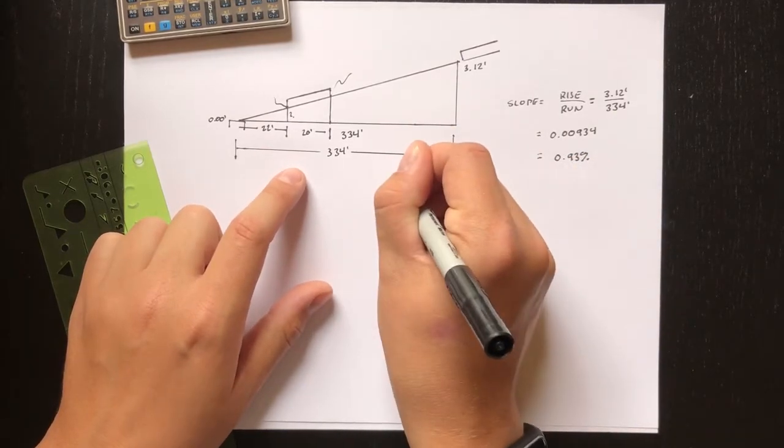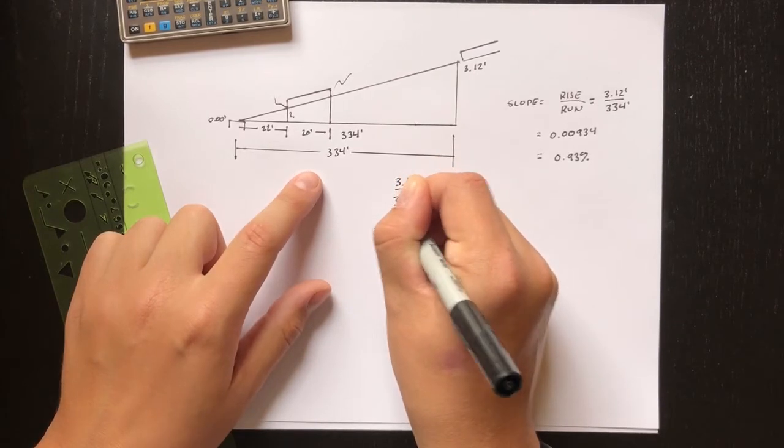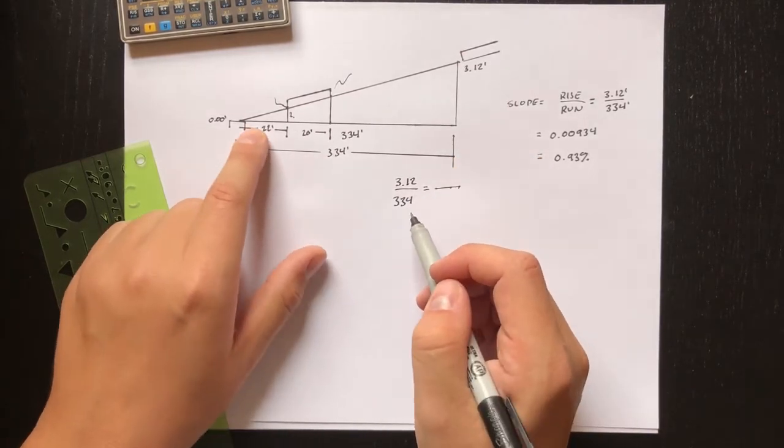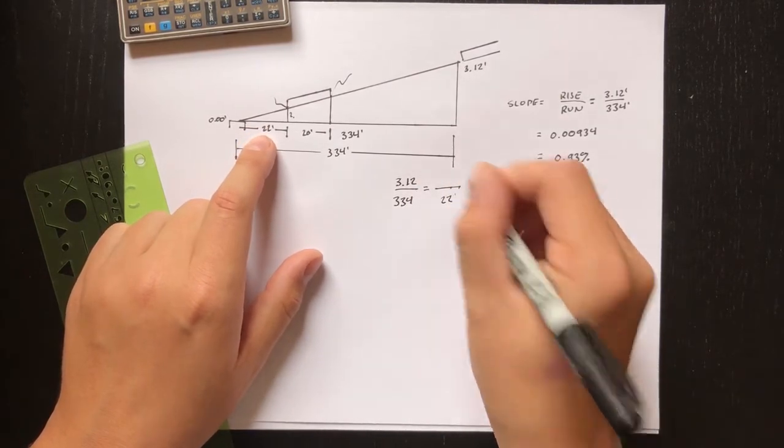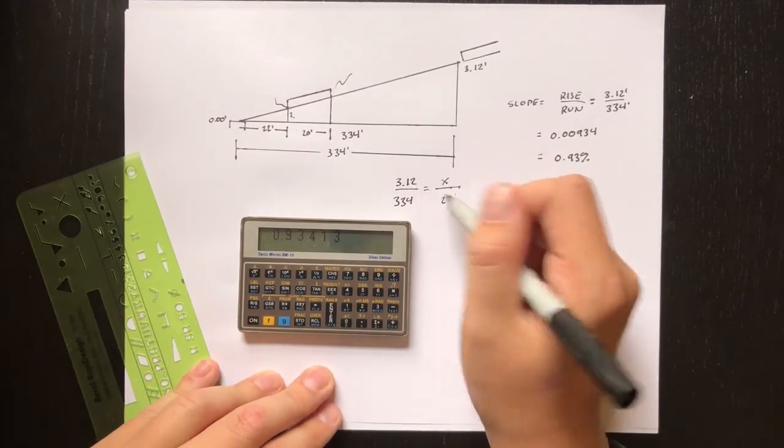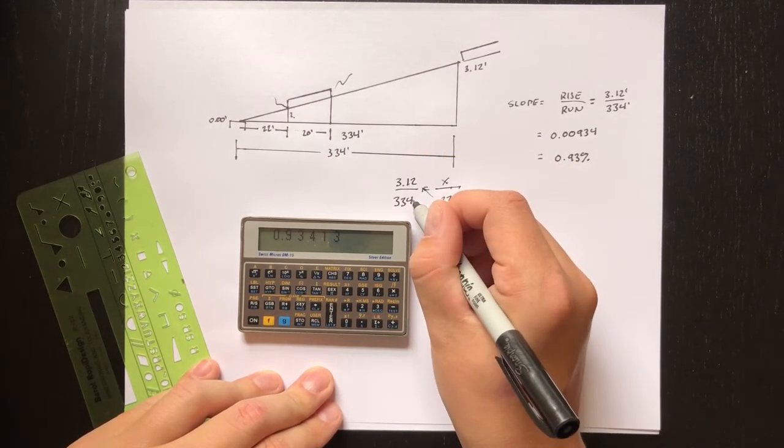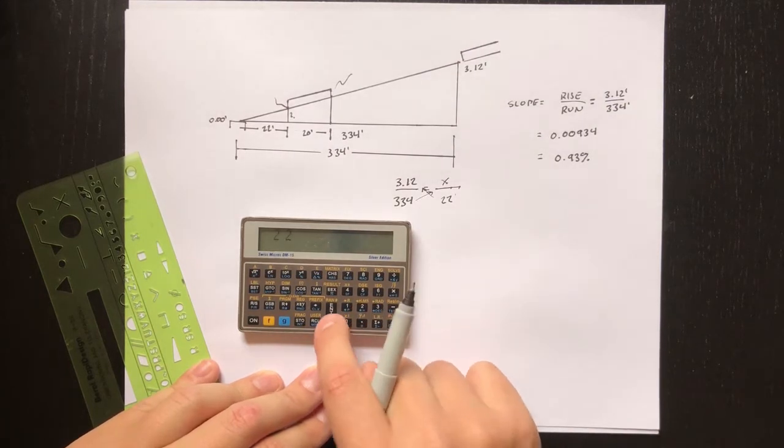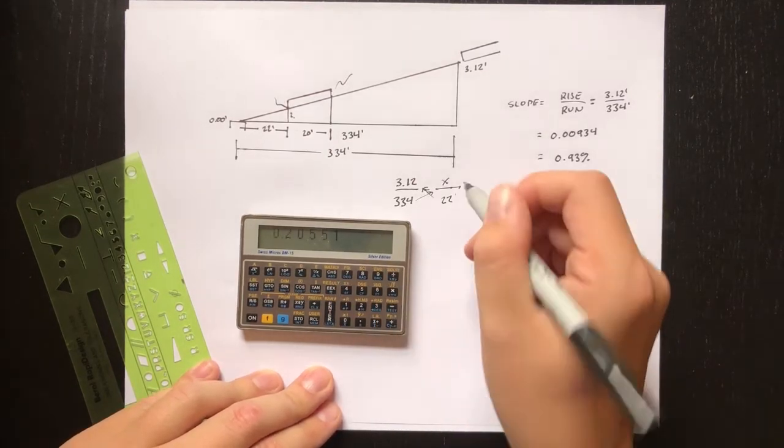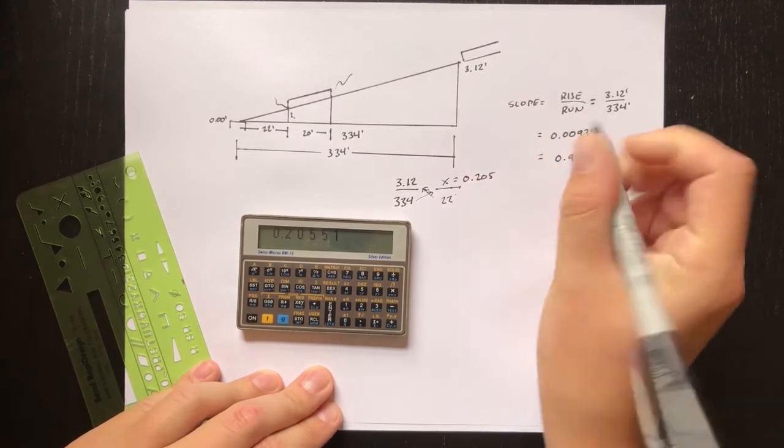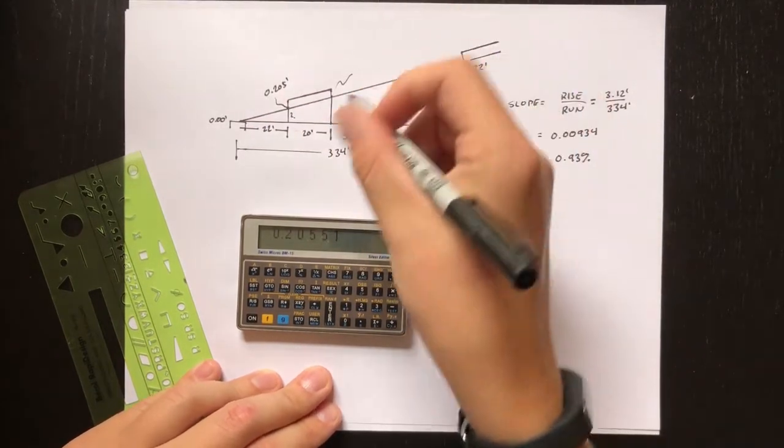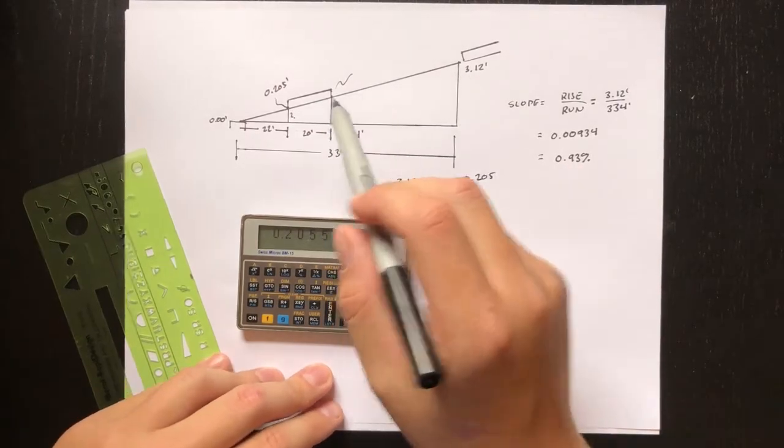When we've got a piece of paper in front of us, this is an easy way to do it. We put our rise on top, we put our run of the big triangle on the bottom, and then we set that equal to another proportion. For our little triangle, the run on the bottom is 22 feet and the rise is what we're trying to figure out, so we'll call that x. To solve a proportion, you multiply - I think of it as a cross - you multiply this guy by this one, and then you divide by this one. So we do 22 times 3.12, and then 334 divide. We get x equals 0.205 feet. Now we know the elevation we want to set the tailwater of our culvert to is 0.205 feet, really 0.21 feet because when you're doing dirt work you usually work in hundredths of a foot.